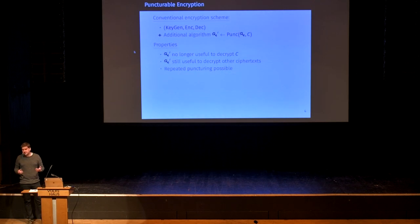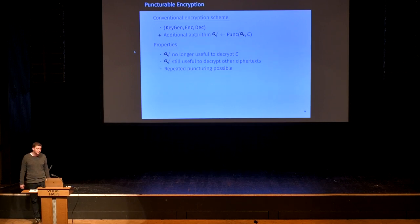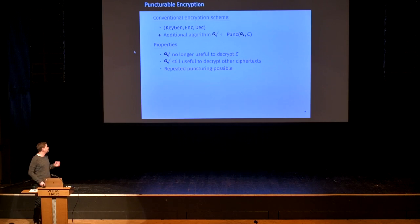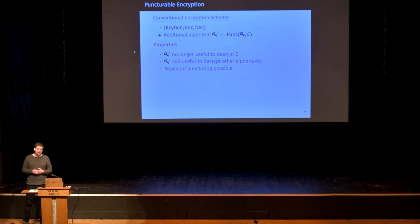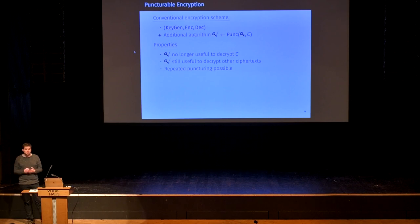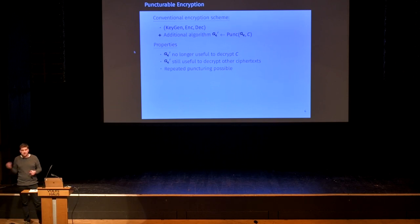Puncturable encryption is pretty much like a conventional public key encryption scheme. You have a key generation algorithm, an encryption algorithm, and a decryption algorithm. Additionally, the only difference is that you have an algorithm called puncture. Such an algorithm takes some secret key and some ciphertext and outputs an updated secret key. The properties are that this updated secret key is no longer useful to decrypt the ciphertext on which it was punctured, but it's still useful to decrypt other ciphertexts. We can repeatedly apply this puncturing algorithm on keys and puncture on multiple different ciphertexts.